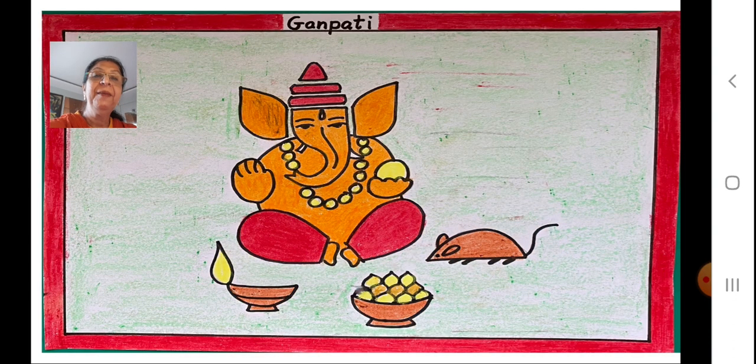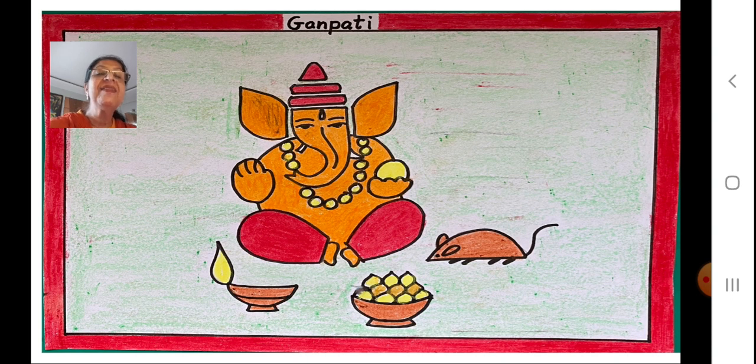We have to do the background. So just take a color and do the background by flattening the crayon. Okay. Yes. So this nice effect will come. And after that you can color the border red. If you want to change the color of the border, you can change it. So now our drawing is complete. Isn't it beautiful? Yes. It is.